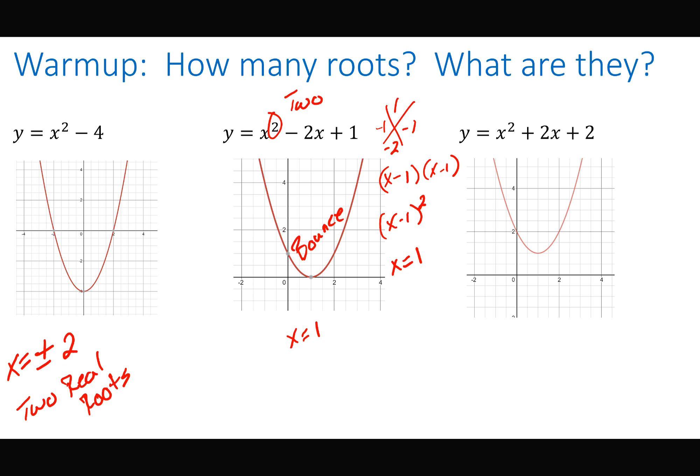So 1 is a zero — you'd say 1 and 1, but we would never say that. We would just write 1, but we are savvy enough to know now that that's a multiplicity of 2. That's the repeated zeros, so there are two real zeros and no imaginary.